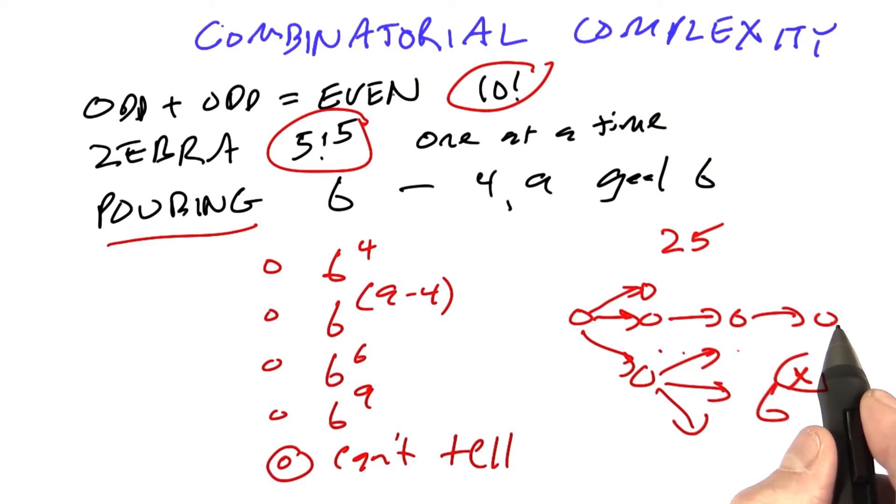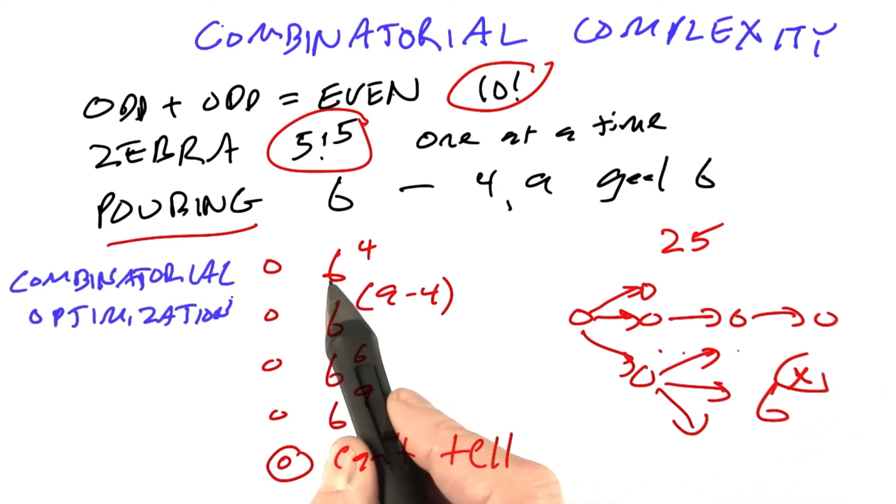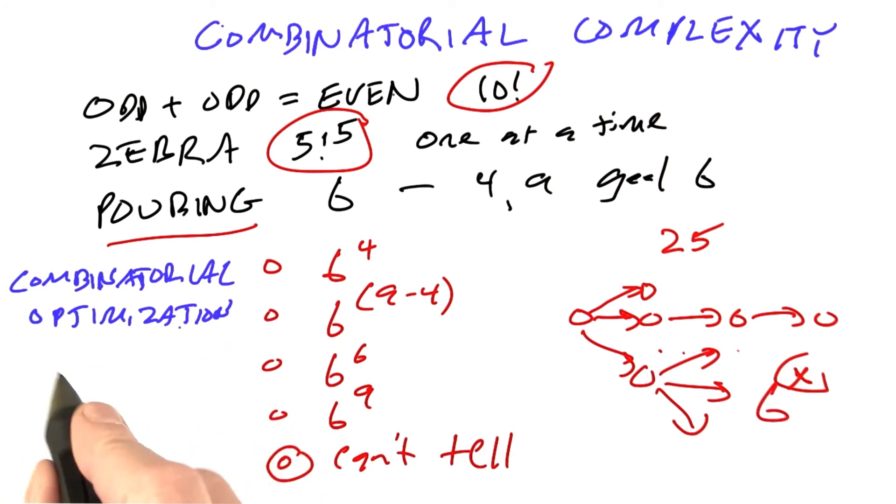That makes the problem slightly different. If we want to be formal, we call it a combinatorial optimization problem, but usually we just call it a search problem.